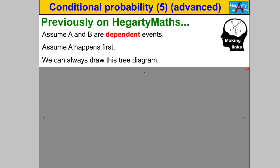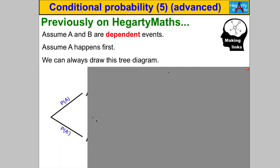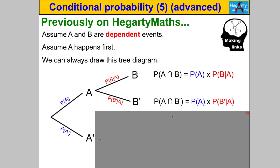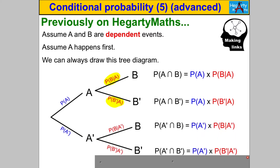If you assume A and B are dependent events and assume A happens first, we can always draw a tree diagram. You consider whether A happens or not, with probability P(A) or P(not A). Then, assuming A did happen, B can happen or not with probability P(B|A) or P(not B|A). If A doesn't happen, we get P(not B|not A) and P(B|not A). We label the diagram accordingly.